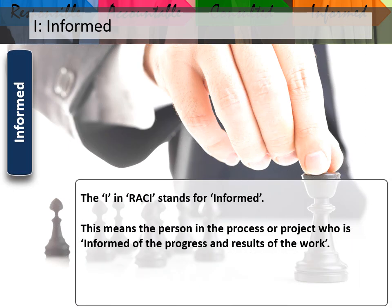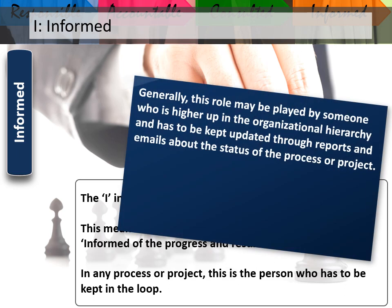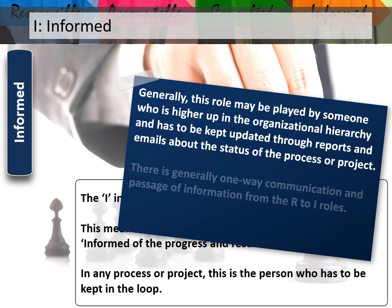I - Informed. The person in the process or project who is informed of the progress and result of the work. In any project, this is the person who has to be kept in the loop. Generally, this role may be played by someone who is higher up in the organizational hierarchy and has to be kept updated through reports and emails about the status of the process or project. There is generally one-way communication and passage of information from the R to I roles.